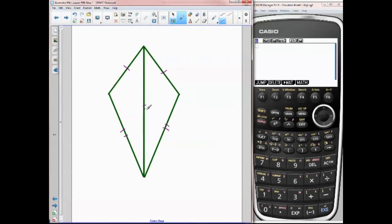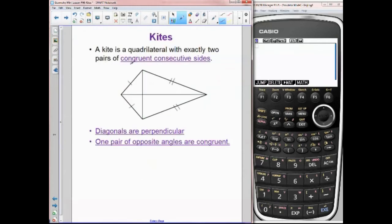And we have our third side that is congruent to itself. So we know that these two triangles are congruent. Now let's take a look at something else here. Here's the formal definition has exactly two pairs of consecutive sides. Here and here are consecutive and here and here are consecutive. Exactly two.